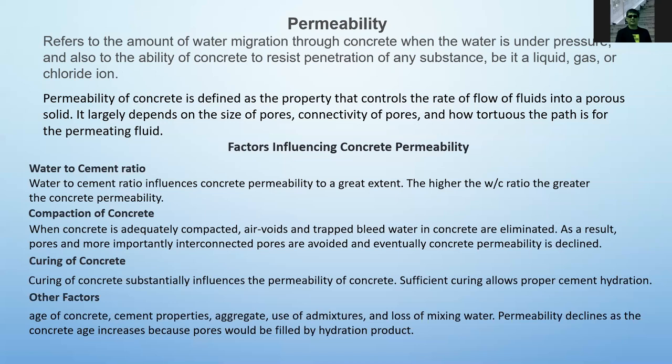When pouring concrete on columns, retaining walls, or slabs, you need to make sure the concrete is adequately compacted so that there will be no voids or honeycombs. As a result, pores and interconnected pores are avoided, and concrete permeability is reduced with adequate compaction. We use a concrete vibrator, or sometimes metal rods, to prevent void spaces or honeycombs inside concrete structures. Honeycombs indicate that the concrete component does not meet standard.